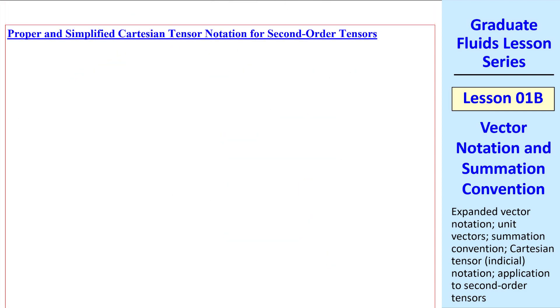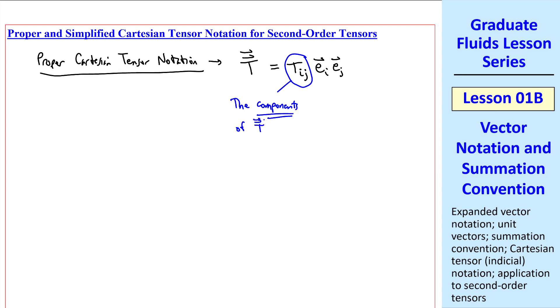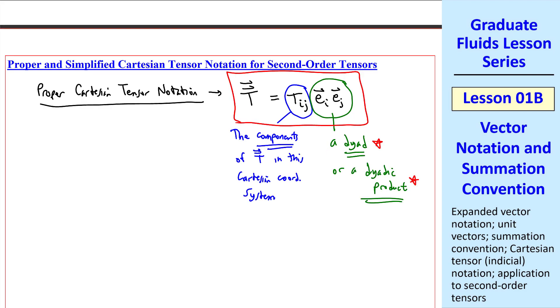Now let's apply these concepts to second-order tensors. In proper Cartesian tensor notation, we'll write our stress tensor, t with two arrows, as tij ei vector ej vector, where tij represents the components of the stress tensor in this Cartesian coordinate system. But what is this product of these two unit vectors? It's not a dot product. These are just two unit vectors multiplied together. Mathematicians call this a dyad, or a dyadic product.